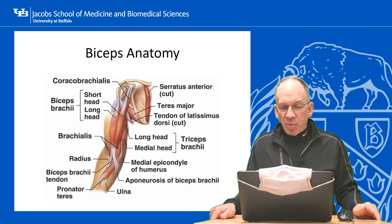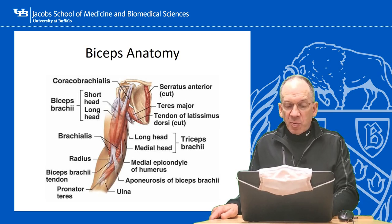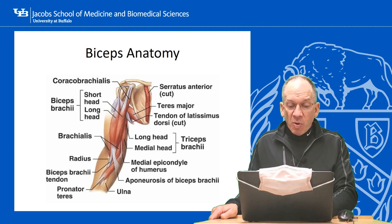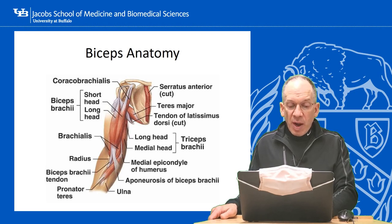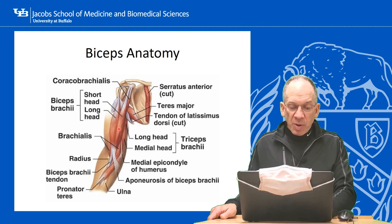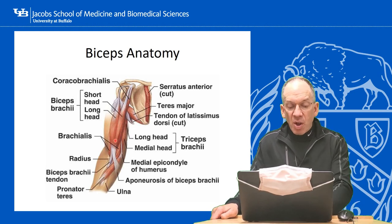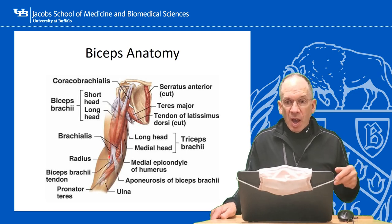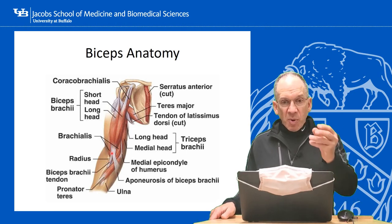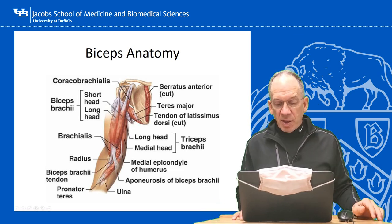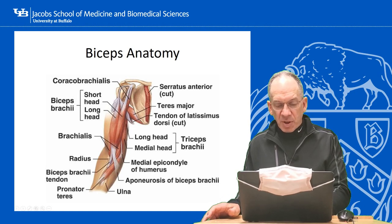We'll talk about the biceps as a good example of tendinopathy. Quick anatomy review: the biceps has two heads. The long head starts above the glenoid and goes through the bicipital groove between the lesser and greater tuberosities, right through the middle of the shoulder joint. The short head comes off the coracoid process with the coracobrachialis — much more stout, does not go through the shoulder joint. Distally, most people have a more or less coalescent biceps tendon insertion, and there's also an aponeurosis known as the lacertus fibrosus.